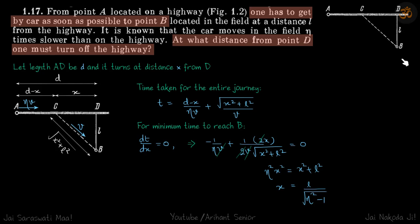Velocity in the field is a bit less than it is on the highway. It's given that the car moves in the field eta times slower than on the highway. So at what distance from point D must one take the turn?